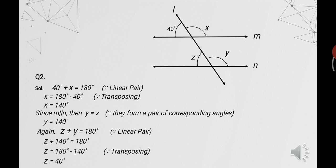To find the value of z, angle z and angle y form a linear pair, so their sum is 180 degrees. Writing z plus y equals 180 degrees, and substituting y equals 140 degrees, we transpose 140 to the right hand side and get z equals 40 degrees.